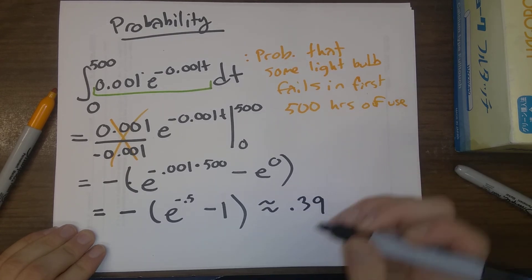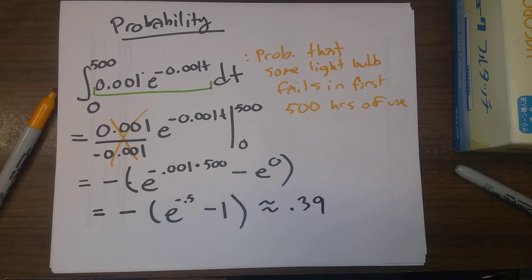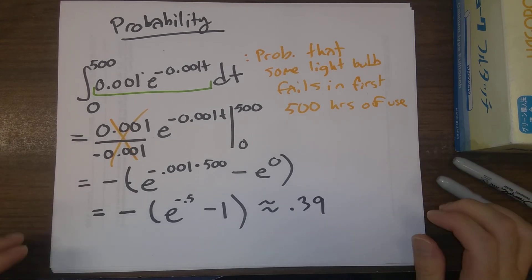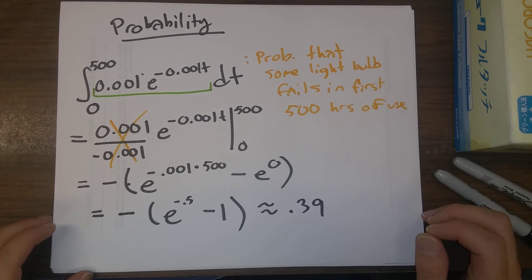So that says there's about a 39% chance that our light bulb fails in the first 500 hours of use. And so correspondingly, there's a 61% chance that it will last for 500 hours or more.